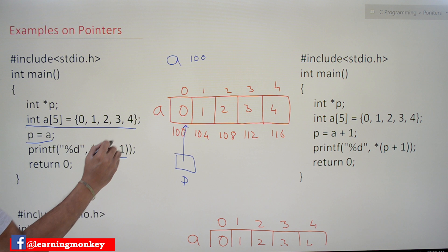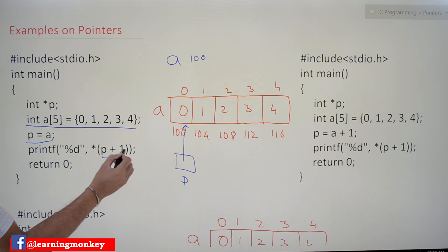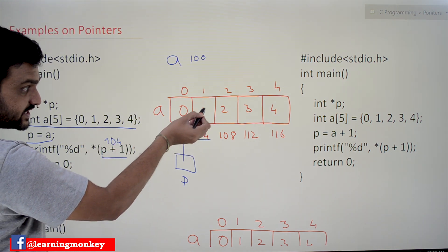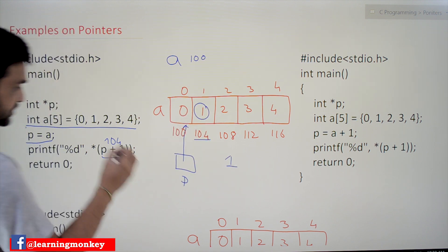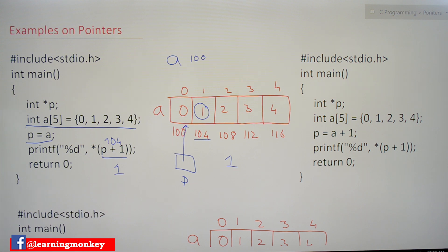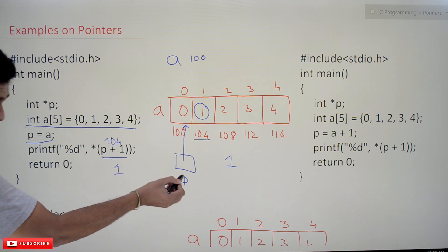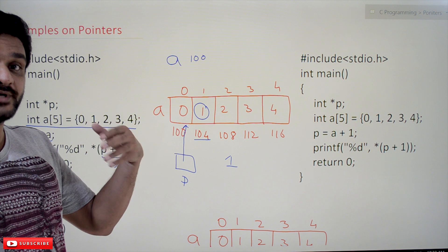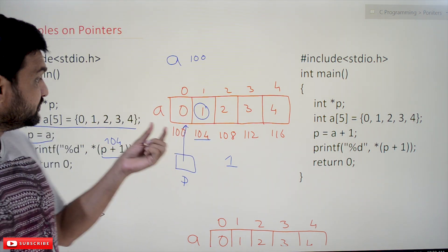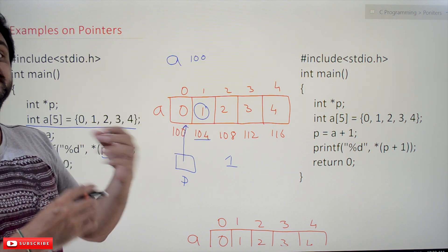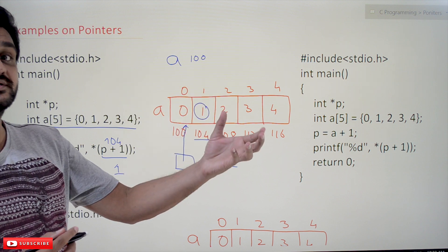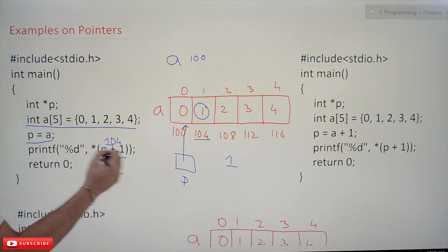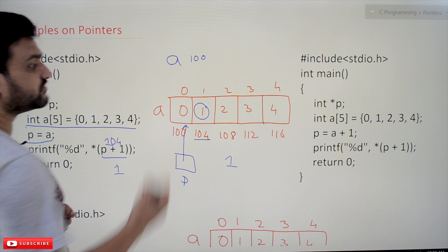Now *(P+1): P+1 means 100 plus 1. As we have seen with address arithmetic, when you add an integer to a pointer assigned to an array, you get the next address — which is 104, not 101. So *(P+1) means go to address 104 and get the value stored there, which is 1. So it is going to print the value 1.